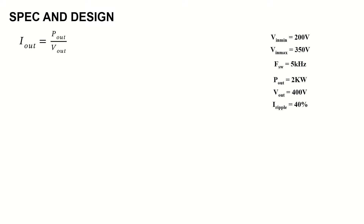Before going into the design, here are the specifications of the converter: minimum input voltage is 200 V, maximum input voltage is 350 V, switching frequency is 5 kHz, power output is 2 kW, output voltage is 400 V, and current ripple is 40%. Output current is Pout divided by Vout — that is 2 kW divided by 400 V — which gives 5 amps. Ripple current is 40% of 5 amps, that is 2 amps.